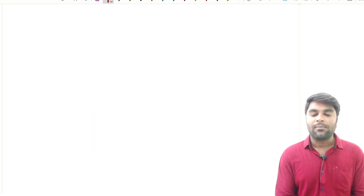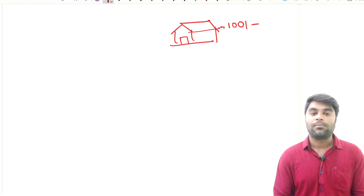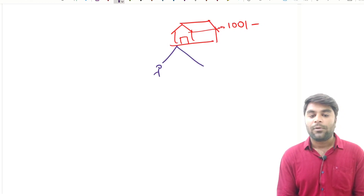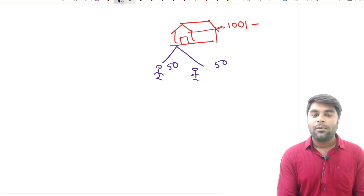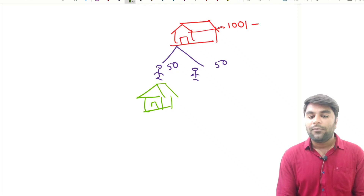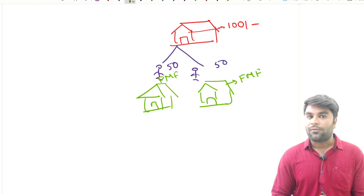Imagine this is a bank and this bank is going to give 100 rupees as a loan. Now imagine two persons took a loan from it — this guy took 50 rupees and this guy also took 50 rupees. With the loan they have taken, imagine he established a pen manufacturing factory and he established a food manufacturing factory.